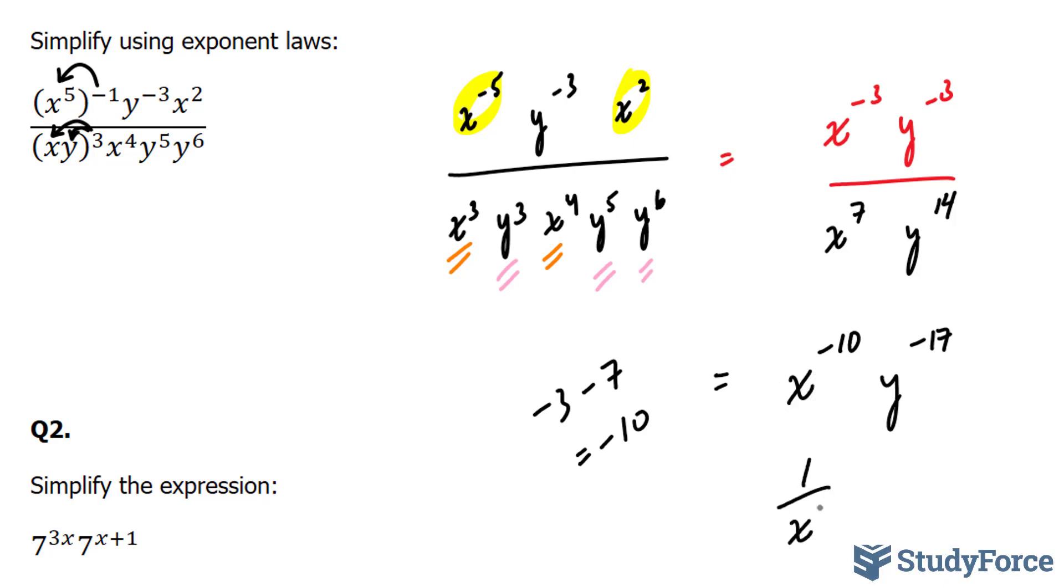This becomes 1 over x to the power of 10. And this becomes 1 over y to the power of 17. Combining these two give you 1 over x to the power of 10, y to the power of 17. So either one of these will work.